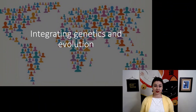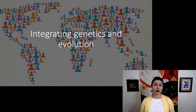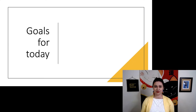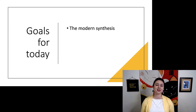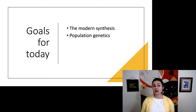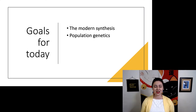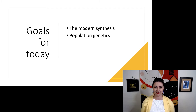There are a couple different things to talk about regarding how evolution and genetics were integrated. First, we're going to talk about the modern synthesis, and then population genetics — one of the most important things to come out of the modern synthesis.